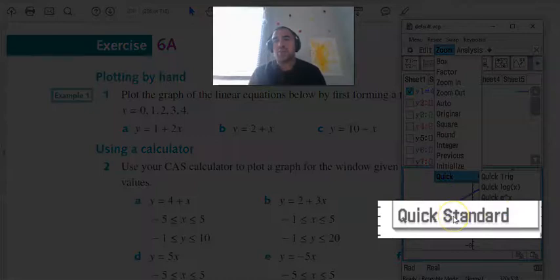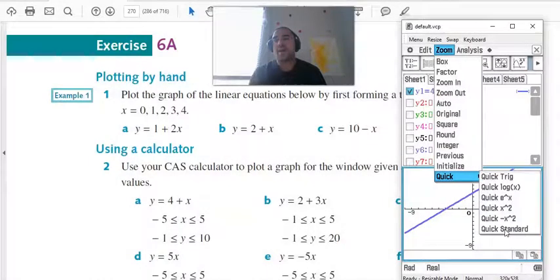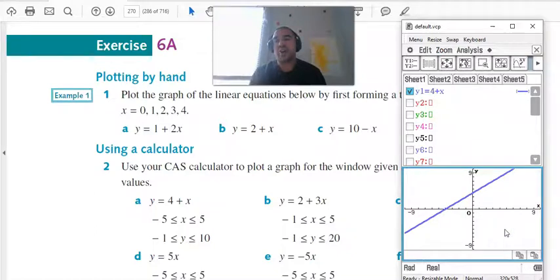Then we're going to go to the button Quick, and we're going to choose Quick Standard. This is just telling the calculator, "Hey, where do you want me to graph? I want you to graph the most standard line for the view." And standard just necessarily means where it hits the x-axis and where it hits the y-axis.